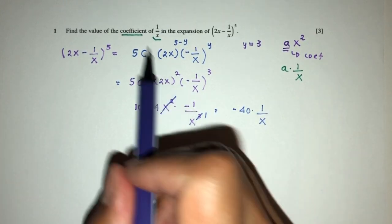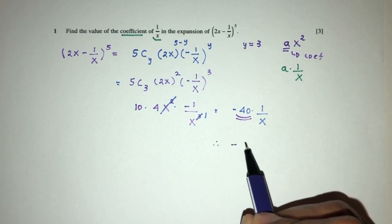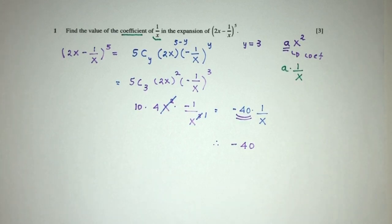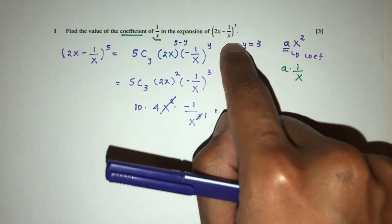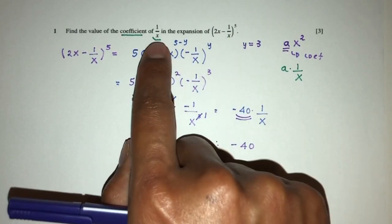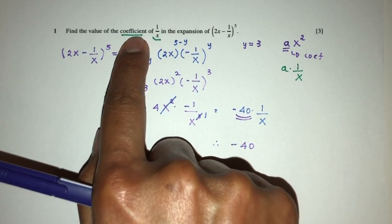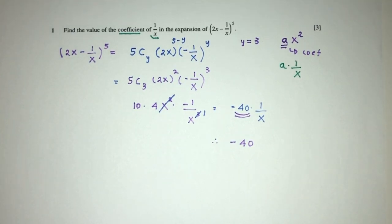So the coefficient of 1 over x will be the value in front of 1 over x. Your answer will be minus 40. This is only one way of doing that question. However, if you guys are not comfortable with this method, you can always expand everything and then choose the one which has the term 1 over x and just provide the coefficient as your answer. This is the question for this binomial expansion. Thank you.